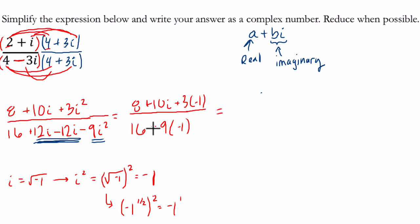Now I just simplify. We have 16 minus 9 times negative 1 is really 16 plus 9, or 25. In the numerator, we have 8 minus 3, because 3 times negative 1 is negative 3, which is 5 plus 10i.